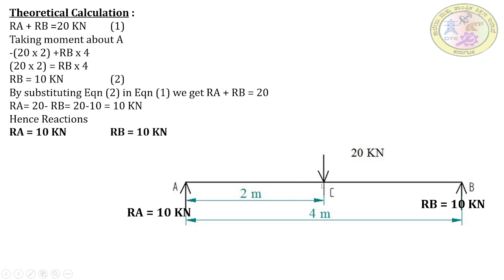Since the point load is acting exactly at the center, the load is equally shared by the two reactions — 10 kilonewton each. If the distance were to vary, the reaction loads would also vary. Since it is at the center, we get exactly equal values shared by both reactions.